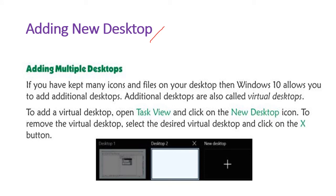Next is adding a new virtual desktop. If you have many icons and files on your desktop, Windows 10 allows you to add additional desktops. To add a virtual desktop, open Task View and click on the 'New Desktop' icon. To remove the virtual desktop, select the desired virtual desktop and click on the X button.